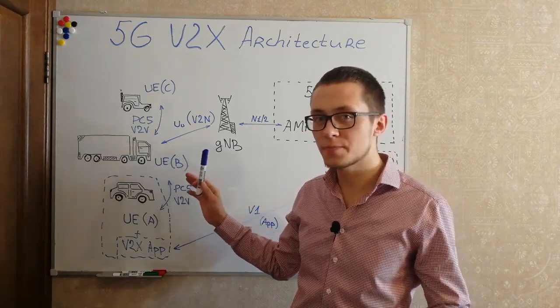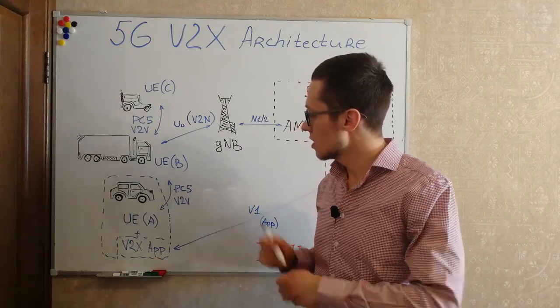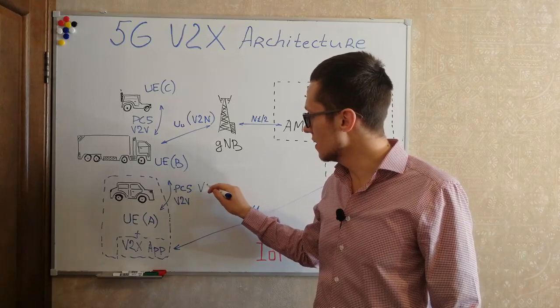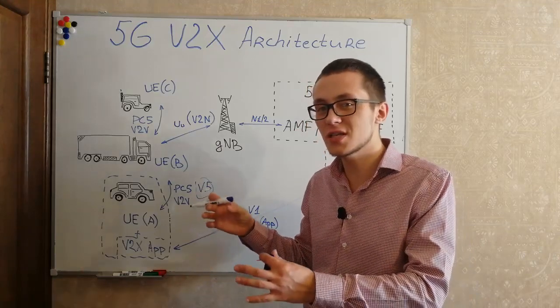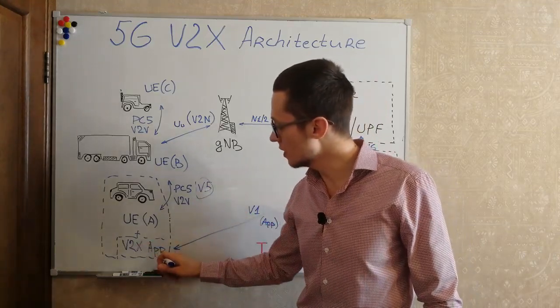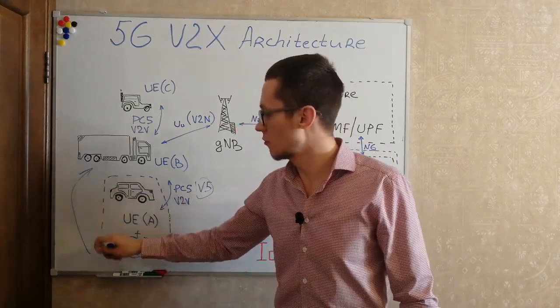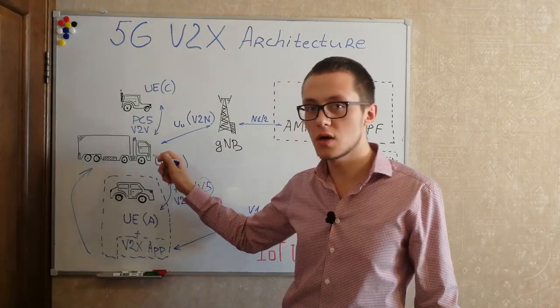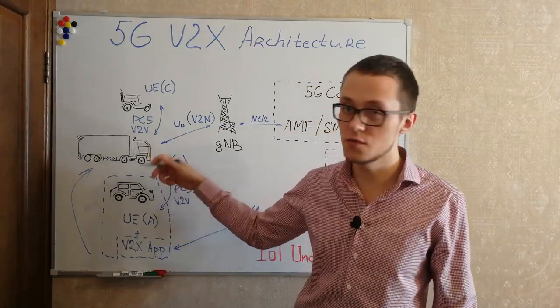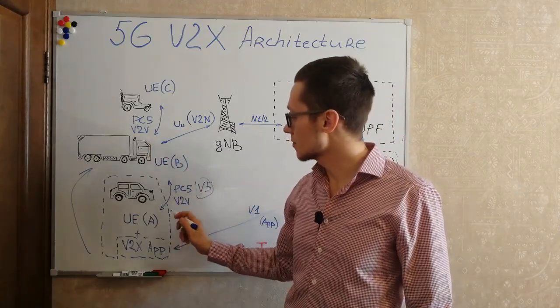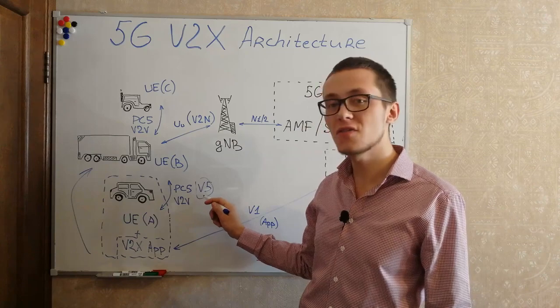Kind of higher from that radio interface we can see the V5 interface. V5 interface it is a kind of just an application interface between V2X application for that user equipment and for that user equipment for that V2X application that installed inside this user equipment B for example. So if cars communicate directly, they communicate via PC5 and V5 interface.